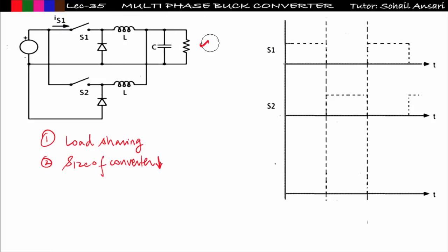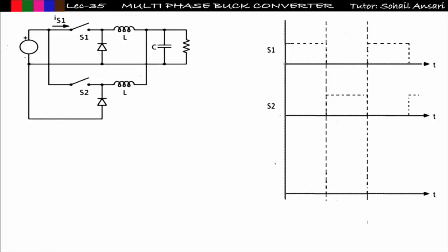Now let us understand how this operates. Two switches are connected: S1 carrying current iS1 and S2 carrying iS2, both at the same rating, with equal inductor values and same diode ratings. Inductor currents iL1 and iL2 flow through each. From the waveforms: S1 is closed from 0 to DT, and S2 is closed from DT to T — so both switches operate in a complementary fashion, meaning if one switch is closed, the other is open.